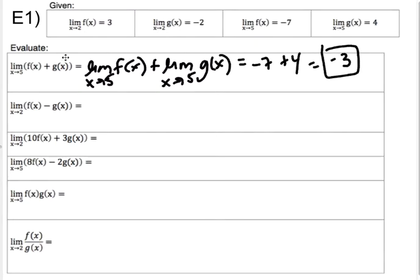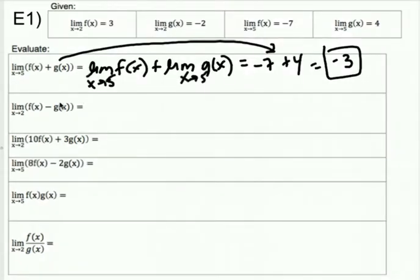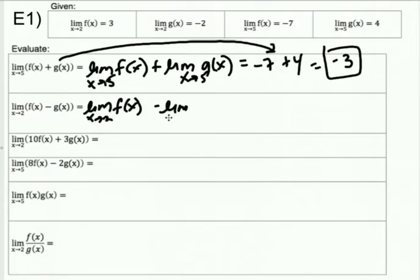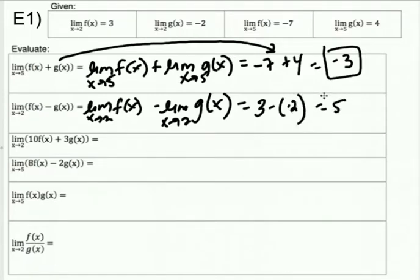But if you were able to skip from here to there, nobody thinks that's cheating. Here we have the limit as X approaches two of the quantity F of X minus G of X. If you need to split this into two limits — the limit as X approaches two of F of X minus the limit as X approaches two of G of X — you can. Then you get three minus a negative two, which is five. Again, if you can skip steps, that's fine.